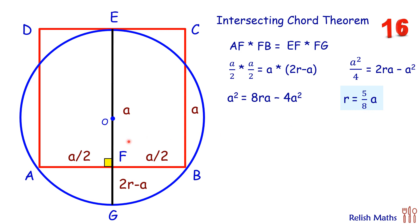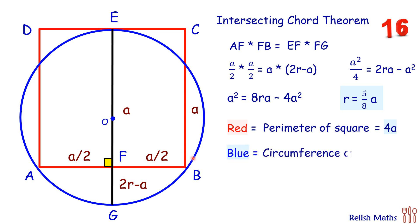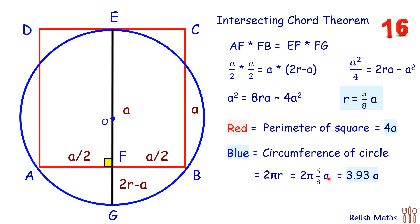Now we can compare the lengths. The red line is the perimeter of the square, which is 4A. The blue line is the circumference of the circle, which equals 2πR. Putting in R = 5/8 A, we get 2π times 5/8 A. Using π ≈ 3.14, the blue line is approximately 3.93A. Thus the length of the red line is greater than the blue line.